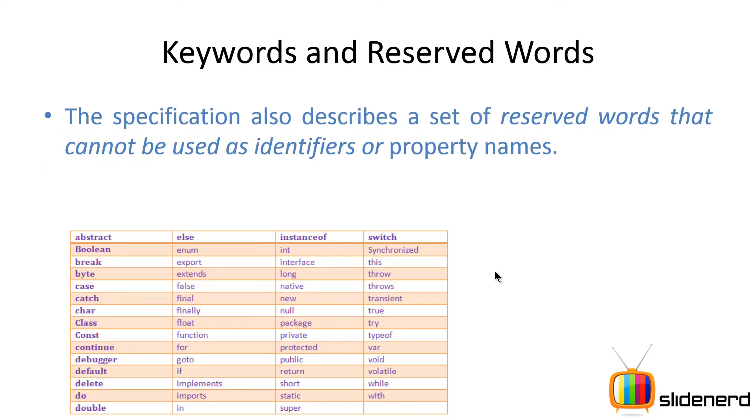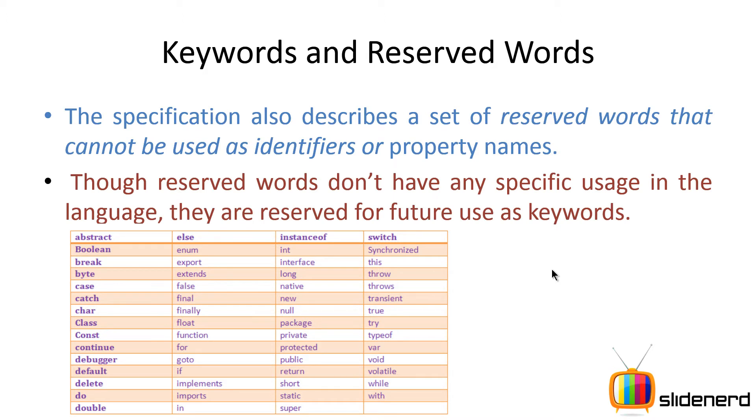Other than keywords, there are certain words called reserved words. Currently they have no meaning, but in upcoming versions of JavaScript they are going to act as keywords, and therefore you're not supposed to use them as identifiers or for naming the stuff that you create. This again changes with the versions of JavaScript, so use Google for finding out the list of reserved words as well.